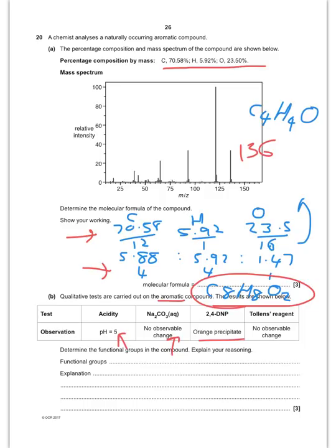You get an orange precipitate with 2,4-DNP, but no change with Tollens reagent, and therefore you're looking at a ketone. So, you've got a phenol and a ketone. The phenol, because it's weakly acidic, but doesn't react with sodium carbonate. The ketone, because you get an orange precipitate with 2,4-DNP, but no reaction with Tollens reagent.